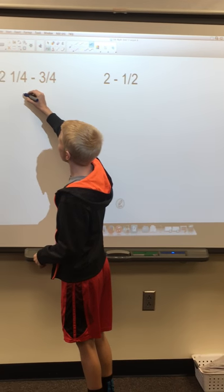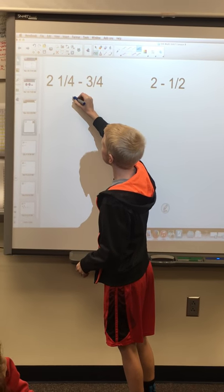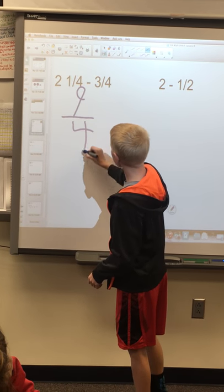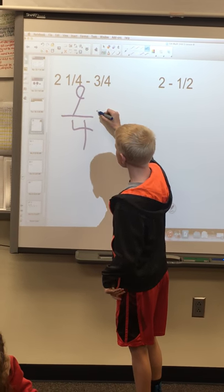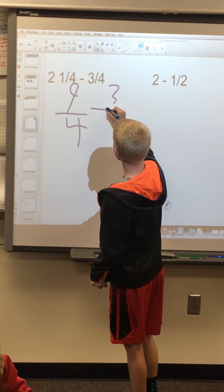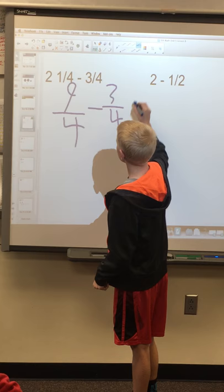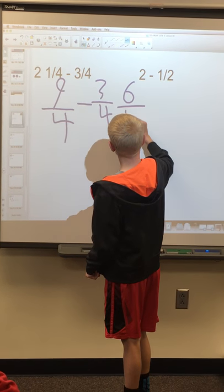I'm going to do 2 times 4, which is 8 plus 1, which is 9 fourths minus 3 fourths equals 6 fourths.